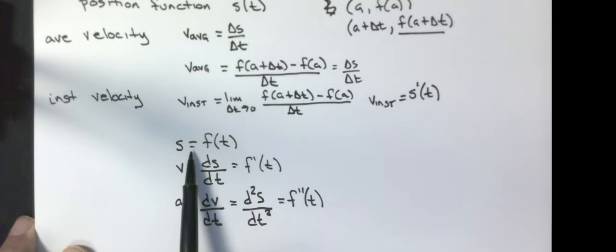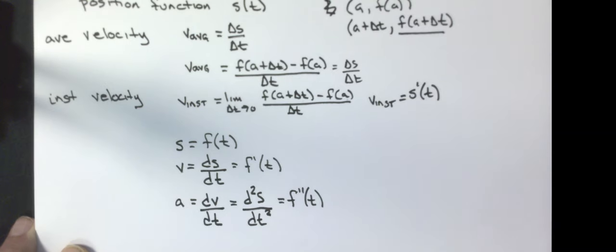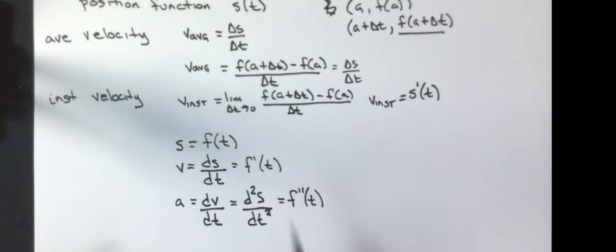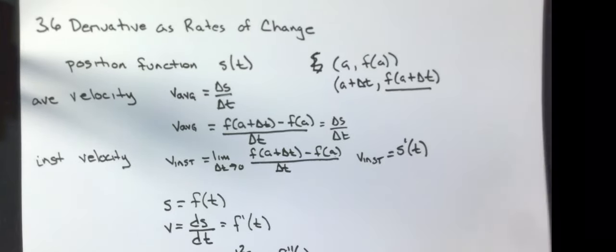So the derivative of the position function gives velocity, and the derivative of velocity gives the acceleration function. I'm going to do one example directly with positions, and then we're going to talk about other models that don't necessarily use position functions. So I'm doing example number three out of the book.